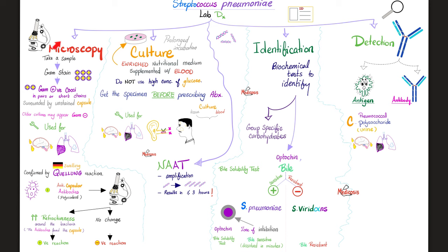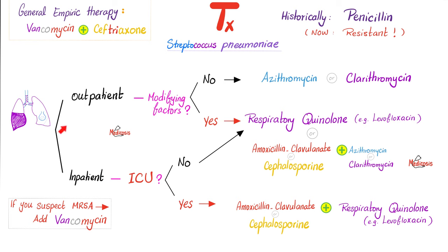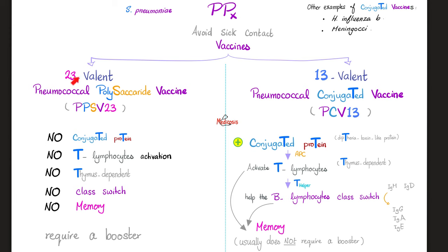How can we diagnose Streptococcus pneumoniae? Microscopy with gram stain. Quellung reaction — literally swelling reaction — because of the capsule. Culture the bacteria, or if you're in a hurry, do a nucleic acid amplification test. For identification, use biochemical tests: look at optochin sensitivity and bile sensitivity — yes, it is sensitive to both. You can find the antigen, i.e., the capsule. Treatment depends on outpatient vs. inpatient. Remember azithromycin and the respiratory quinolones — levofloxacin, not ciprofloxacin. For prophylaxis, we have vaccines: the 23-valent and the 13-valent.